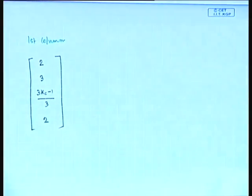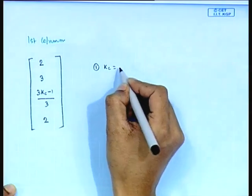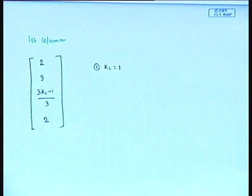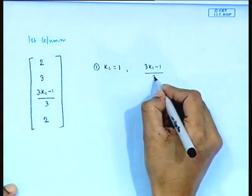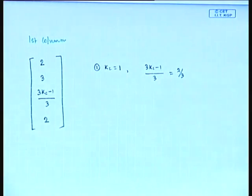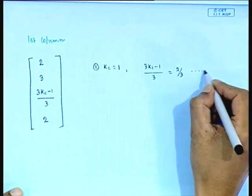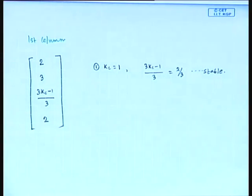We will try some values of Kc. Suppose Kc = 1: the third element in the first column becomes 2/3, which is positive. Since all elements in the first column are positive, the closed loop system is stable when Kc = 1.